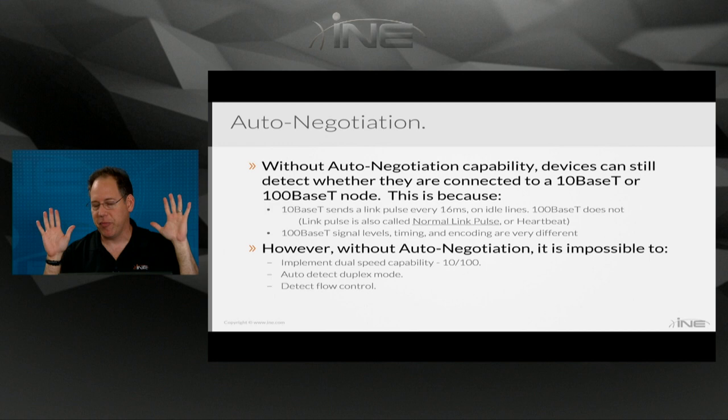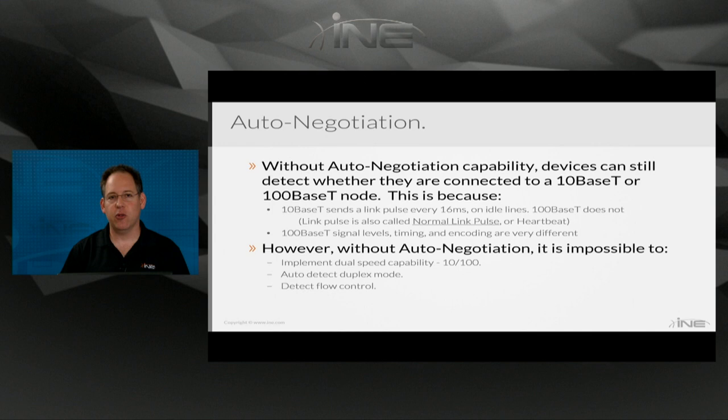These days, 20-plus years later, auto-negotiation is very stable — it's on everything, and you don't have to worry about it; it just works. This is one of those things that works in the background, but if you're wondering how your NIC card knows what speed and duplex to select, it's because of auto-negotiation. That concludes this video on auto-negotiation. In the next video, we're going to talk about the Ethernet frame structure.